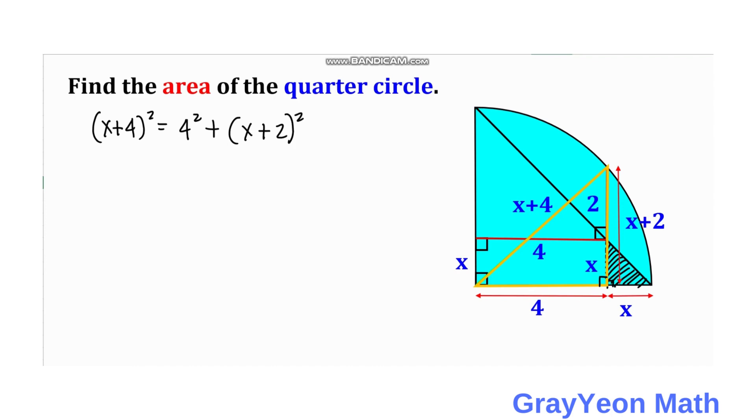And we have x squared plus 8x plus 16 is equal to 16 plus x squared plus 4x plus 4. Next, we cancel this x squared and x squared, and this 16 and 16.